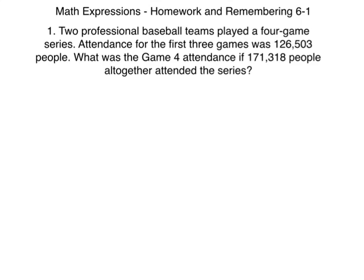So we need to figure out an equation. When they ask for an equation, that means you must write it with a variable letter like n or x. I'm going to use variable n for this. So we know we have 126,503 people for the first three games. Now, plus some number we don't know yet, is going to give us the total.